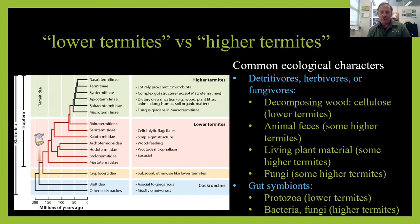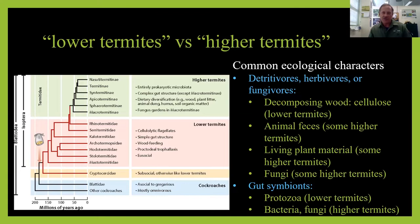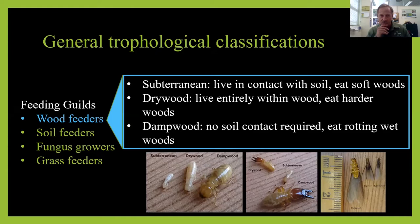Looking at termite diversity on earth, it's really only the lower termites that we think of as causing a lot of damage. Many higher termites eat animal feces or living plant material, and all termites provide ecological services by breaking down organic matter as it decomposes. In California, we have three categories that may become pests attacking our homes: subterranean termites, drywood termites, and dampwood termites.